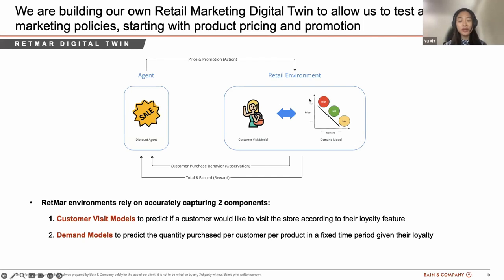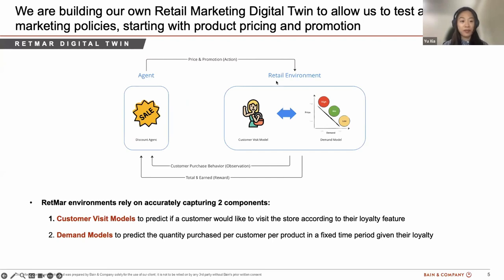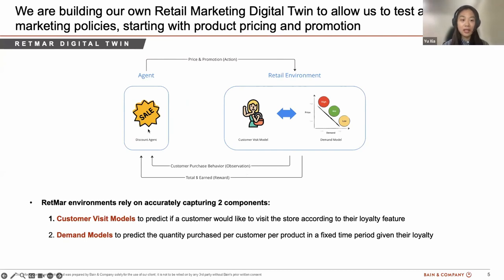The next step asks: now that the customer visits the store, how many units of products will they purchase? This is affected by product price, promotion events, and customer preferences. Each component in the environment can be built in a probabilistic manner. After the environment produces a response to the discount action, it sends the observation back to the discount agent, including aggregated rewards earned. We formulate this flow repeatedly so we can run the simulation again and again.